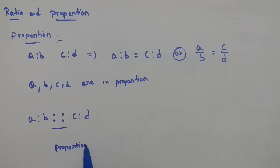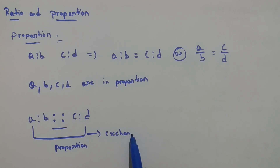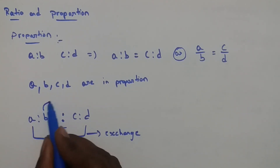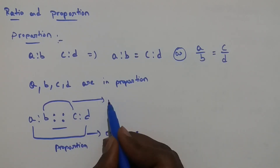A and D are called extremes, and B and C are called means.